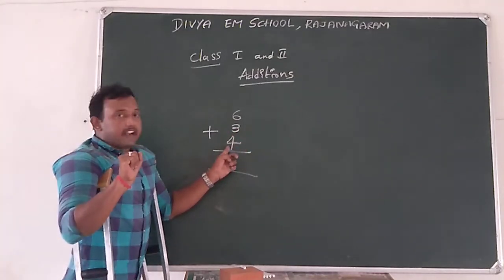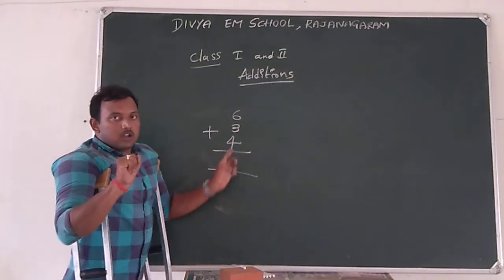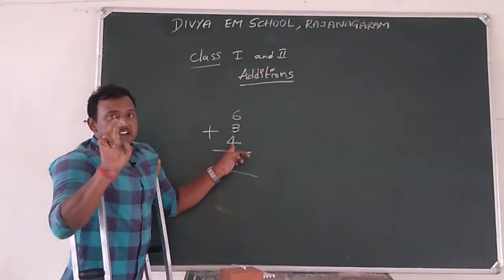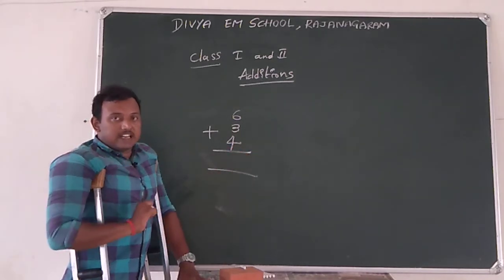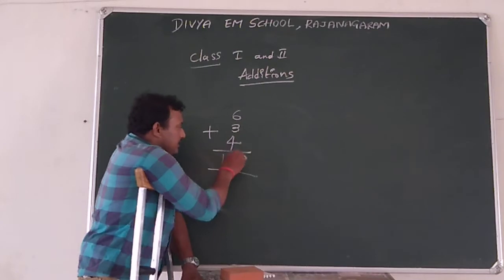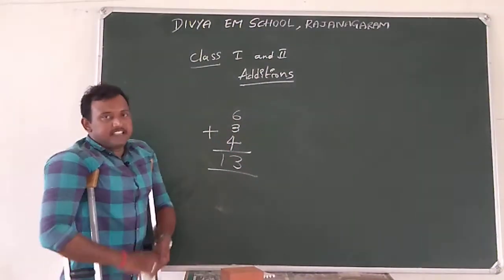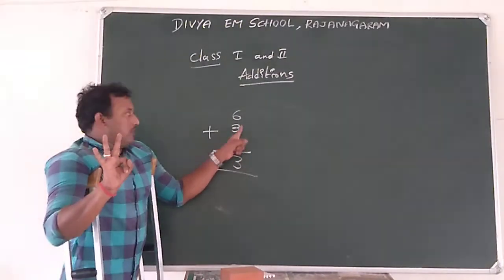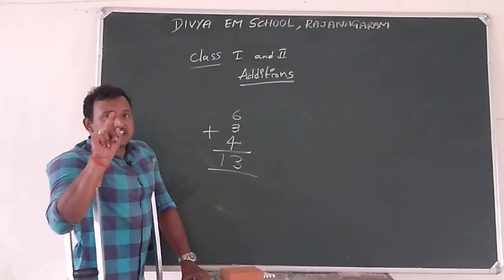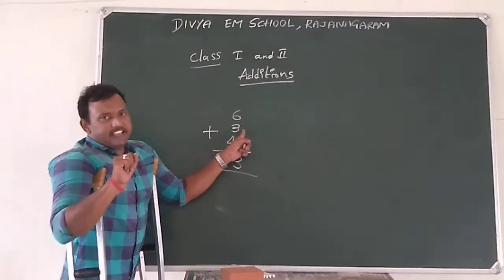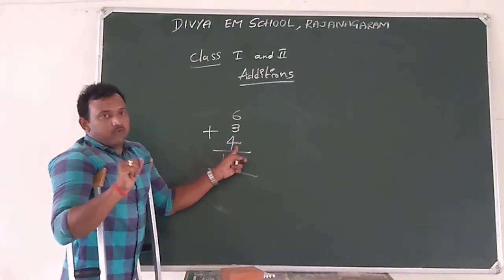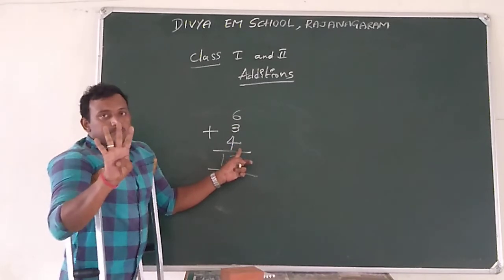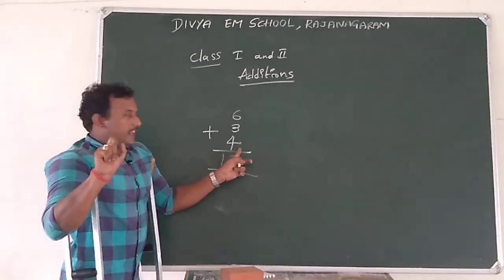After 3, we are having here 4. I am going to take 4 again. After 9: 10, 11, 12, 13. So the total is 13. The first number is 6. After 6, we take second number 3. When we add 6 to 3: 7, 8, 9. So the total is 9 here. After 9, I take another 4 fingers. After 9: 10, 11, 12, 13. So the total is 13.